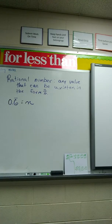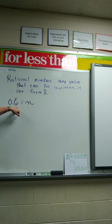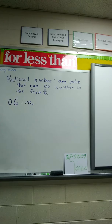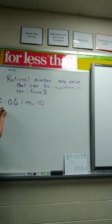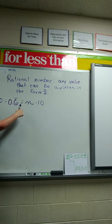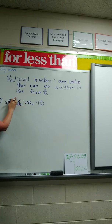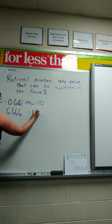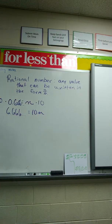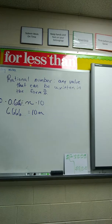Then, we are going to multiply each side by 10. I have one decimal that repeats. So I need one zero after my one. So we're going to multiply by 10. That means that I have 10 times 0.66666. We're going to go out three decimal places. Okay? 10 times that is 6.666. That equals 10n. Everybody with me? Okay.